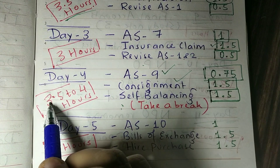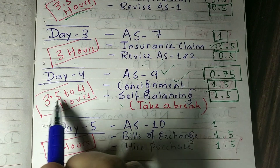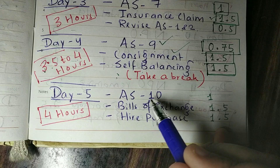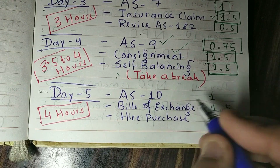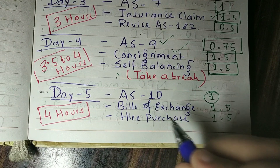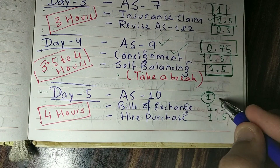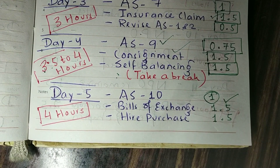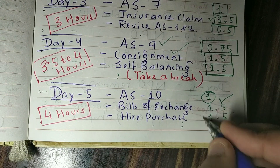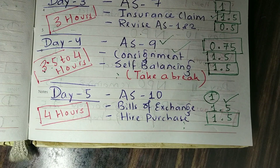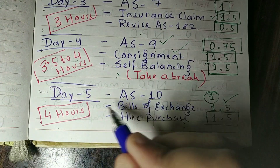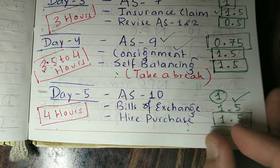So on Day 4 you have to contribute 3.5 to 4 hours in total. On Day 5, you have to learn Accounting Standard 10 (PPE), which will take 1 hour. Then you have to do Bills of Exchange, which will take 1.5 hours. After that, you have to do Hire Purchase, which will also take 1.5 hours. The total for Day 5 will be 4 hours.